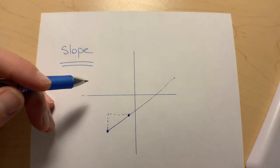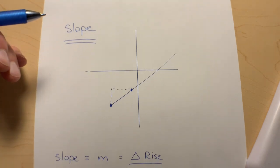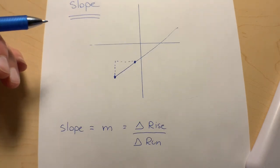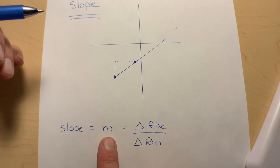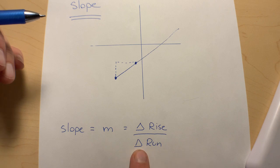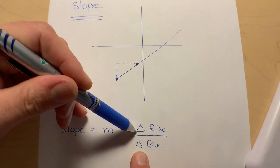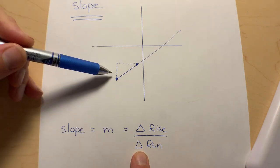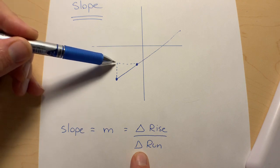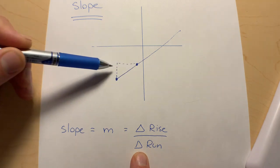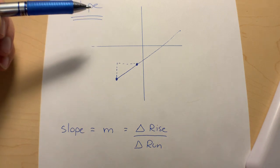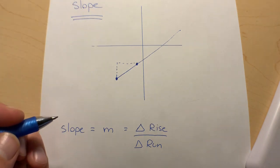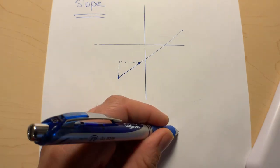And how to calculate that? Well, if we think about a formula, slope is the same thing as m in linear equation stuff, and really that's the change—so triangle means change—the change in rise compared to the change in run, or horizontal movement.